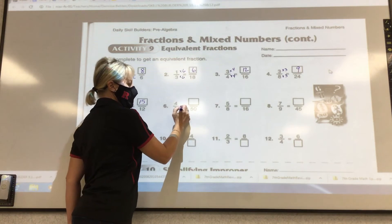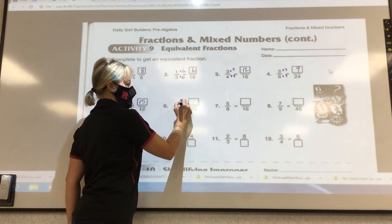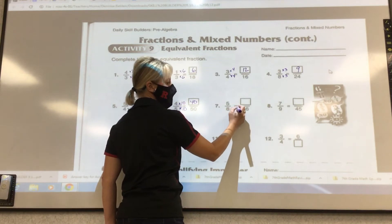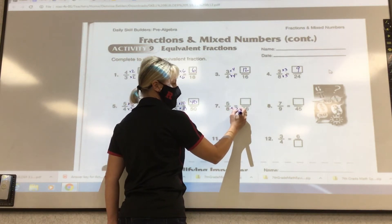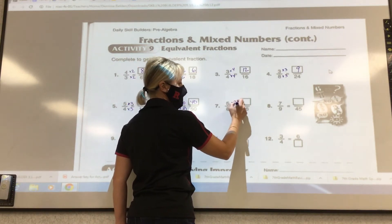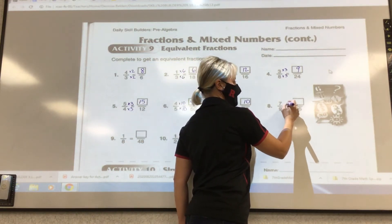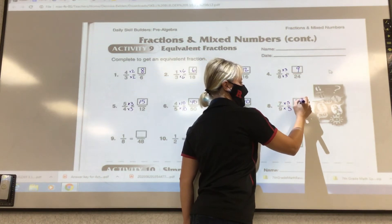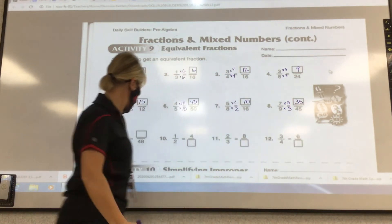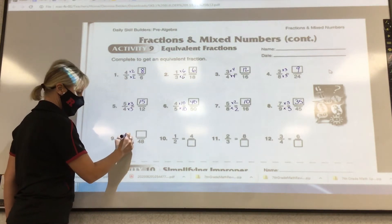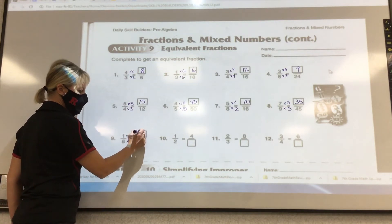5 times what is 50? 10. So 4 times 10 is 40. 8 times? 2. 2 is 16, so 5 times 2 is 10. 9 times? 5. 45, so 7 times 5 is 35. I think more of you can be giving me an answer. 8 times what is 48? 6. So 1 times 6 is 6.